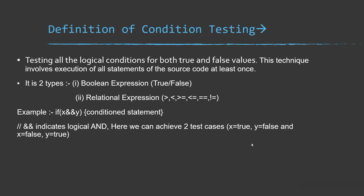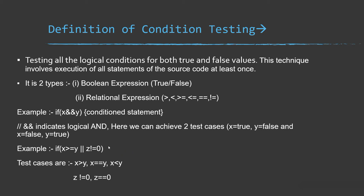Next, let's take an example of a relational expression. If X >= Y OR Z != 0 — for the expression X >= Y, it will return three test cases: X > Y, X == Y, or X < Y. And for the expression Z != 0, it will return two test cases: Z != 0 and Z == 0. So this is all about condition testing.